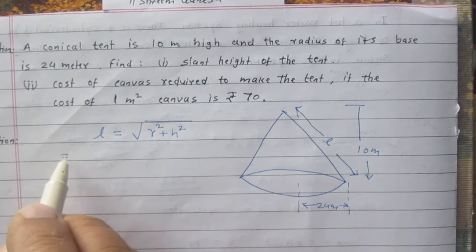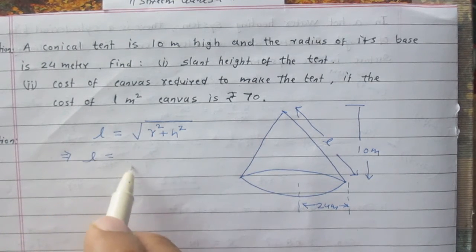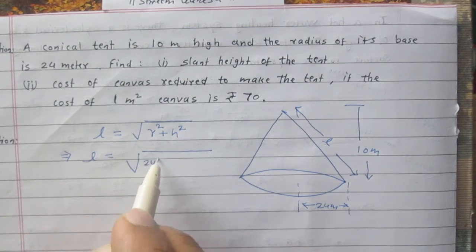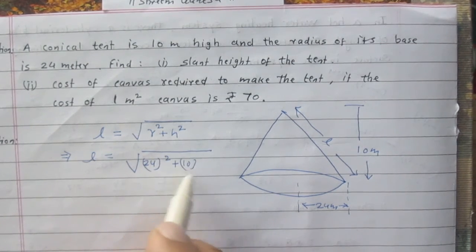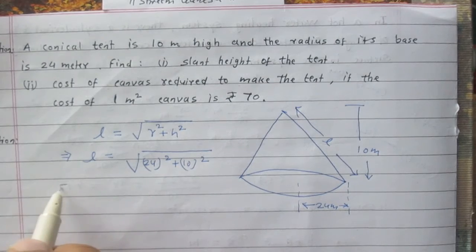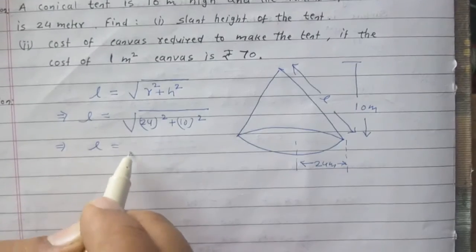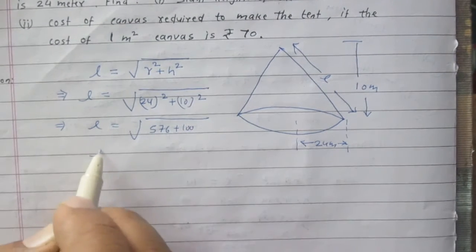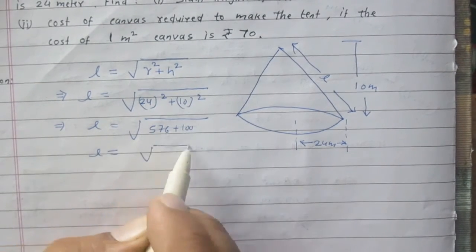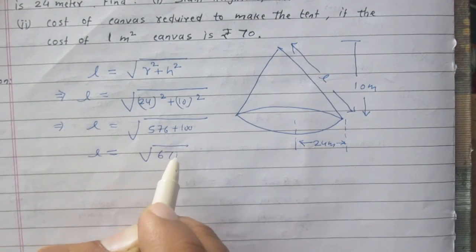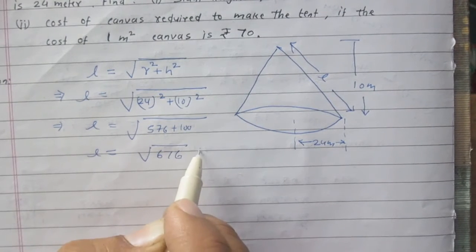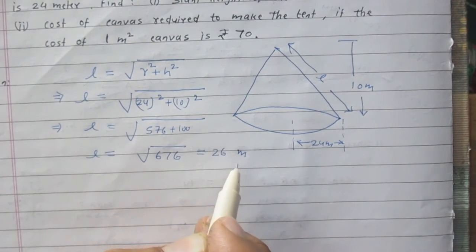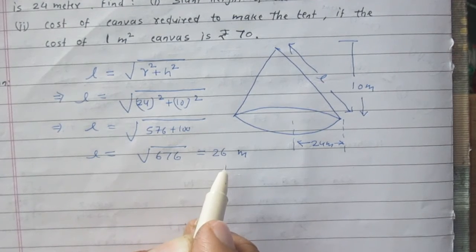After substituting the values, we will get slant height of this conical tent is square root of 24 square plus 10 square. Here we will get 576 plus 100, and then l is equal to square root of 676, which is 26 itself. So we can say that slant height of this cone is 26 meter.